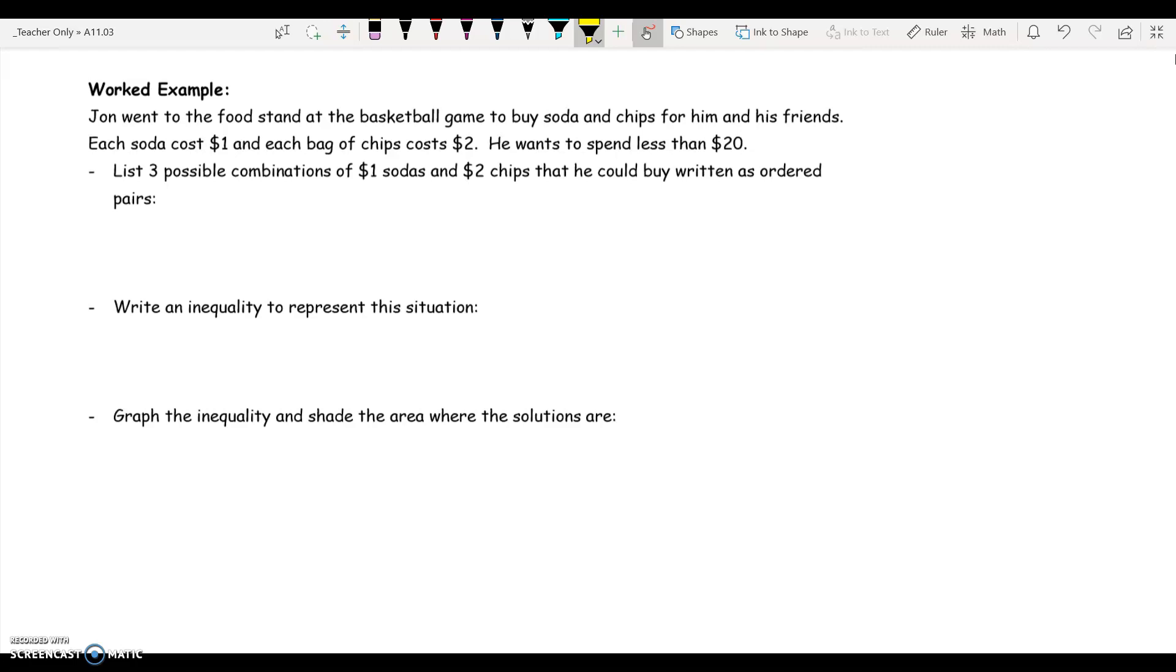In this first example we see John went to the food stand at the basketball game to buy soda and chips for him and his friends. Each soda cost a dollar and each bag of chips cost two dollars. That's important information so I'm going to highlight that. He wants to spend less than twenty dollars. List three possible combinations of chips and sodas. So three possible combinations could be three sodas and two chips, written as an ordered pair that would be three comma two.